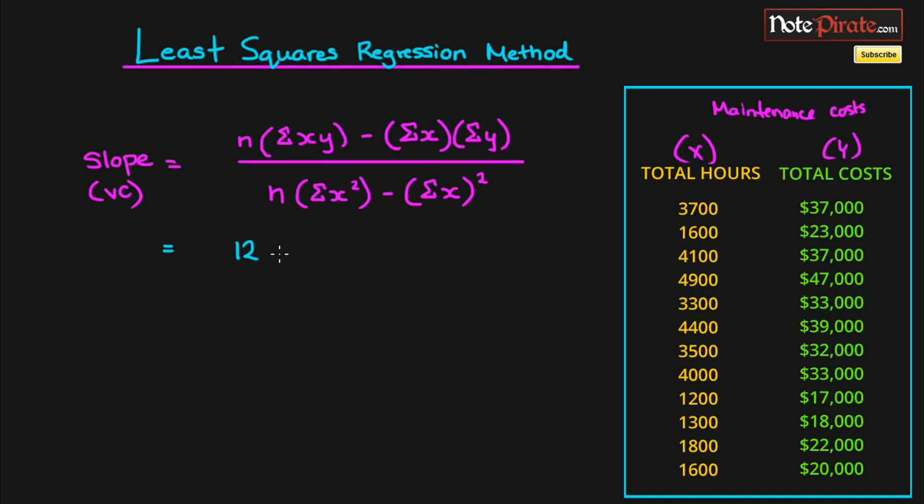This sigma symbol stands for the sum of, so the sum of x times y. We're going to multiply 3700 by 37,000 and then add that to 1600 times 23,000, then add 4100 times its corresponding cost, and so on. We multiply these first and then sum all of them up.